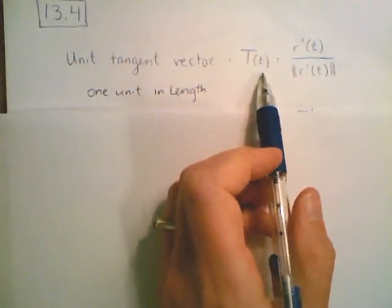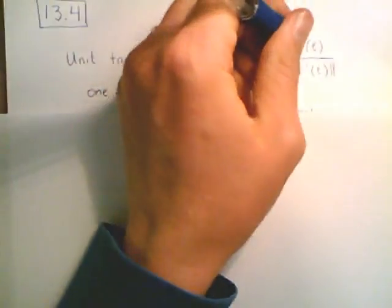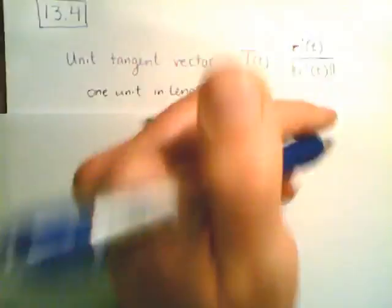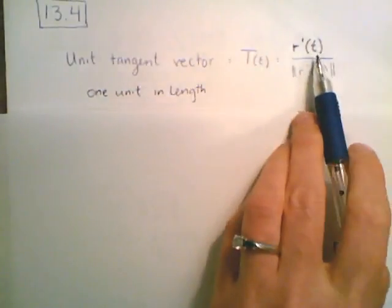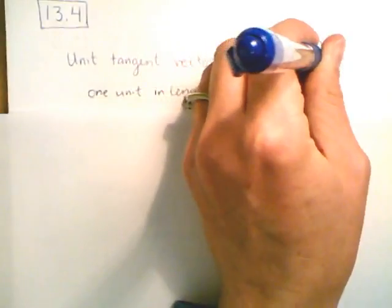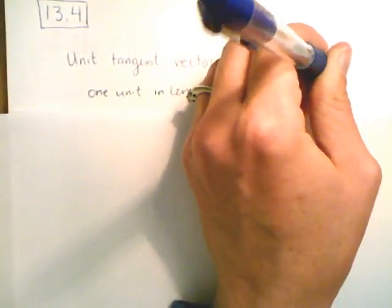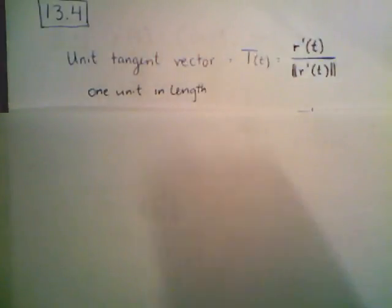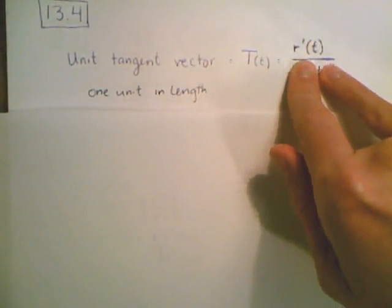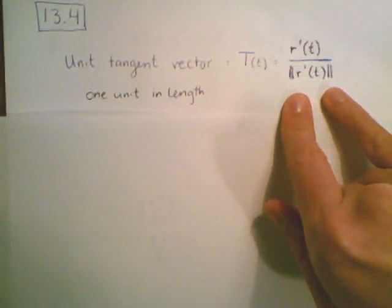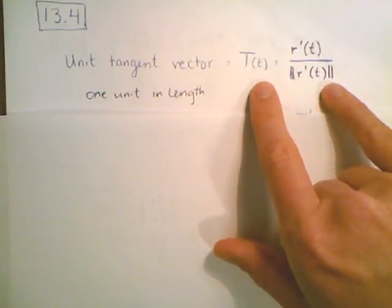We've already talked about the tangent vector — it is the derivative vector. The derivative vector will not necessarily be one unit in length, as we saw previously. Depending upon the parameterization, certain parameterizations are going to have different lengths or variable distances that a particle travels. To ensure that we have a unit tangent vector, we take the tangent vector and divide by its magnitude.